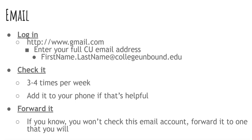Whenever you are going to access your email, one of the quickest ways is by going to gmail.com — that is http://www.gmail.com. When prompted, put in your full email address: that is both the username, which is usually your first and last name with a period in the middle, the at symbol, and collegeunbound.edu.